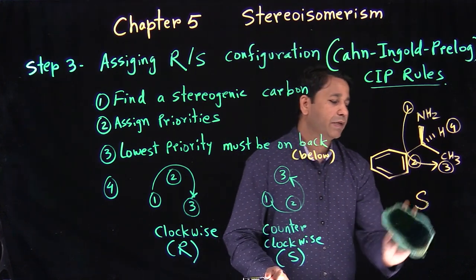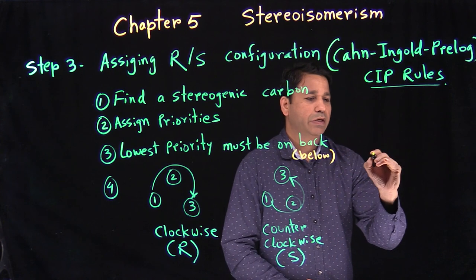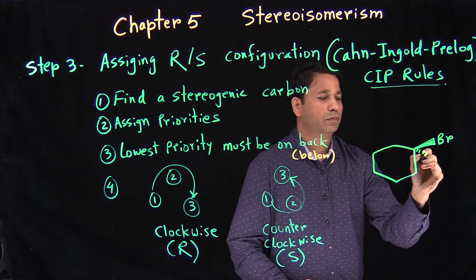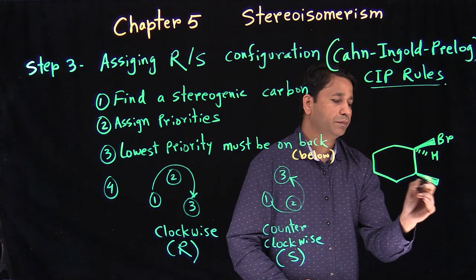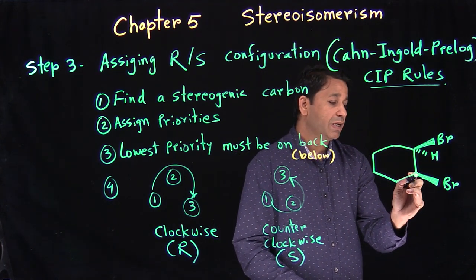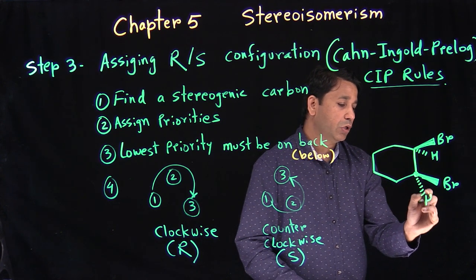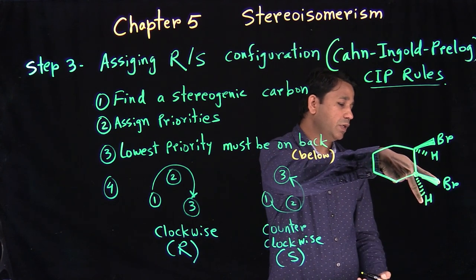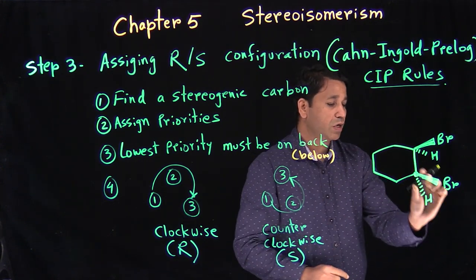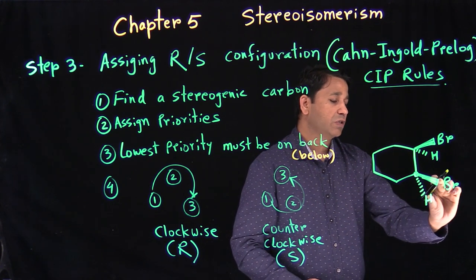Now let's look at ring structures with more than one stereogenic carbon. A quick note: when you don't have a hydrogen explicitly drawn, place the hydrogen in a V-shape with the solid wedge line. If it's in a V-shape, that reflects the tetrahedral structure correctly. Always write the missing group in a V-shape.